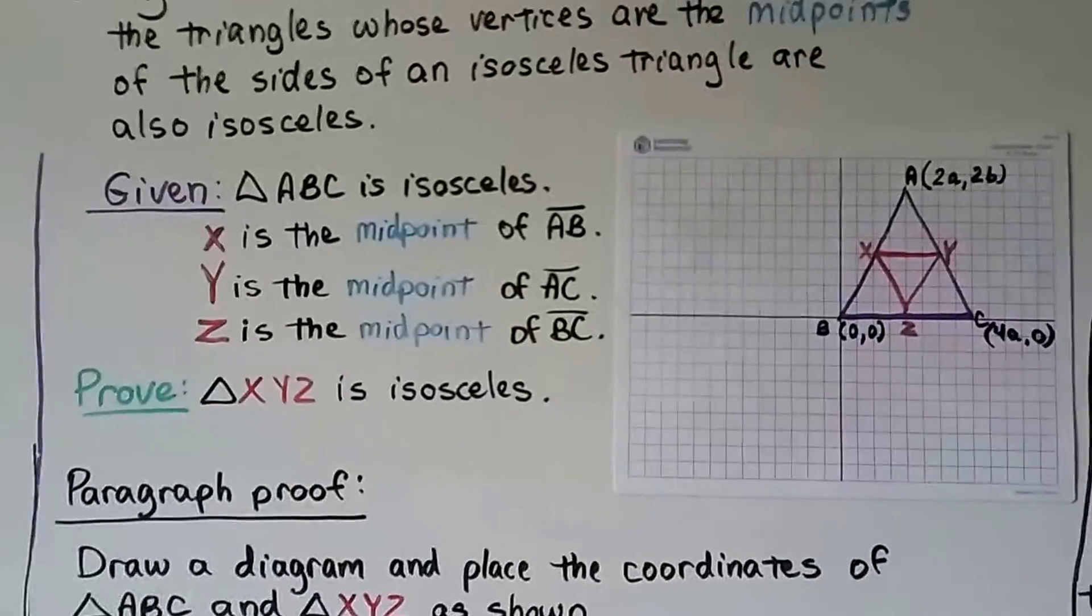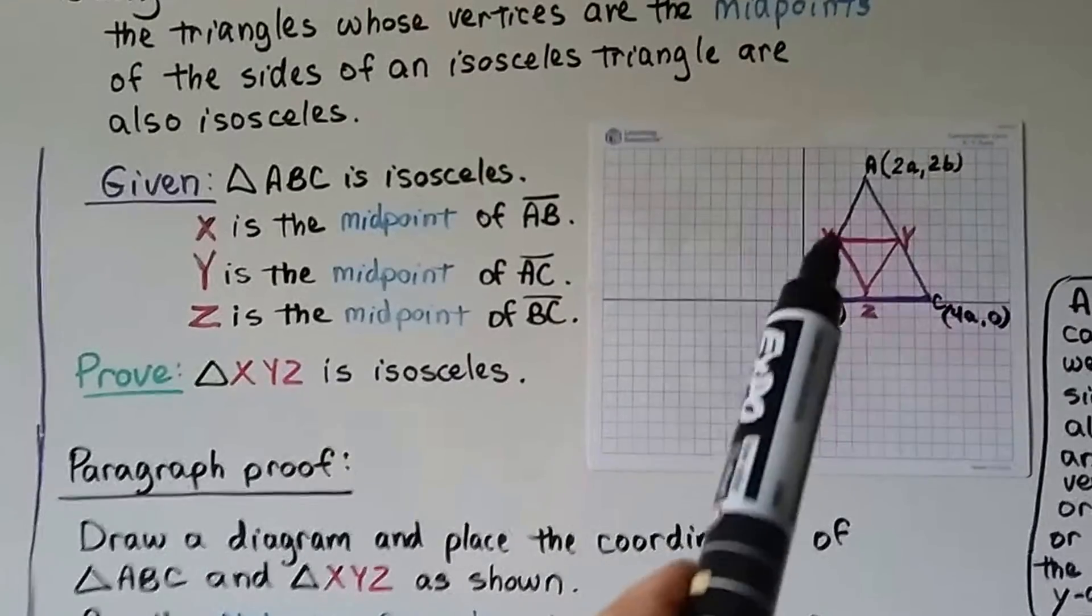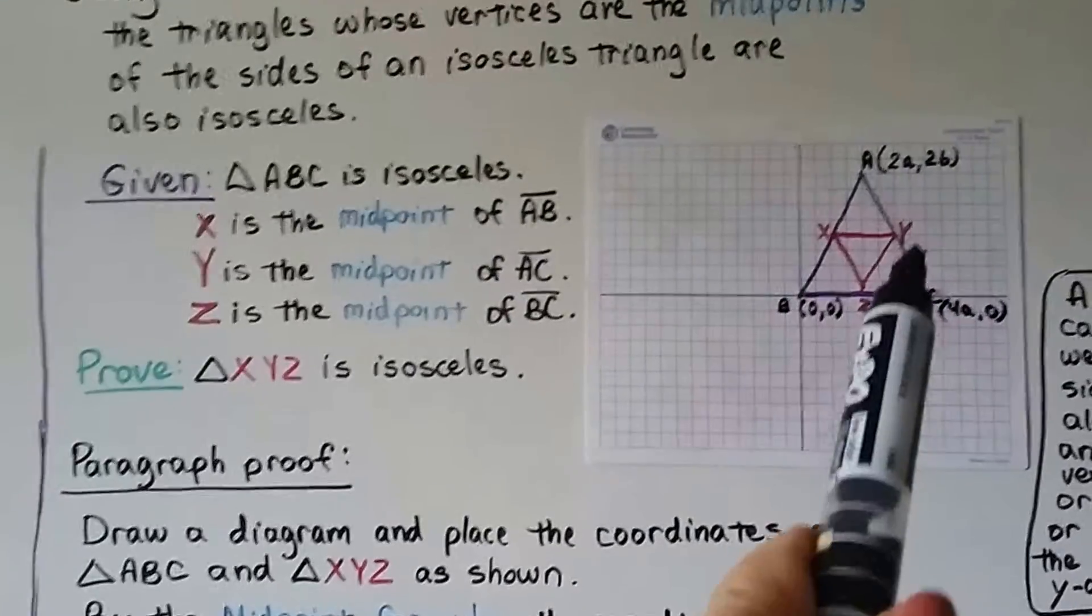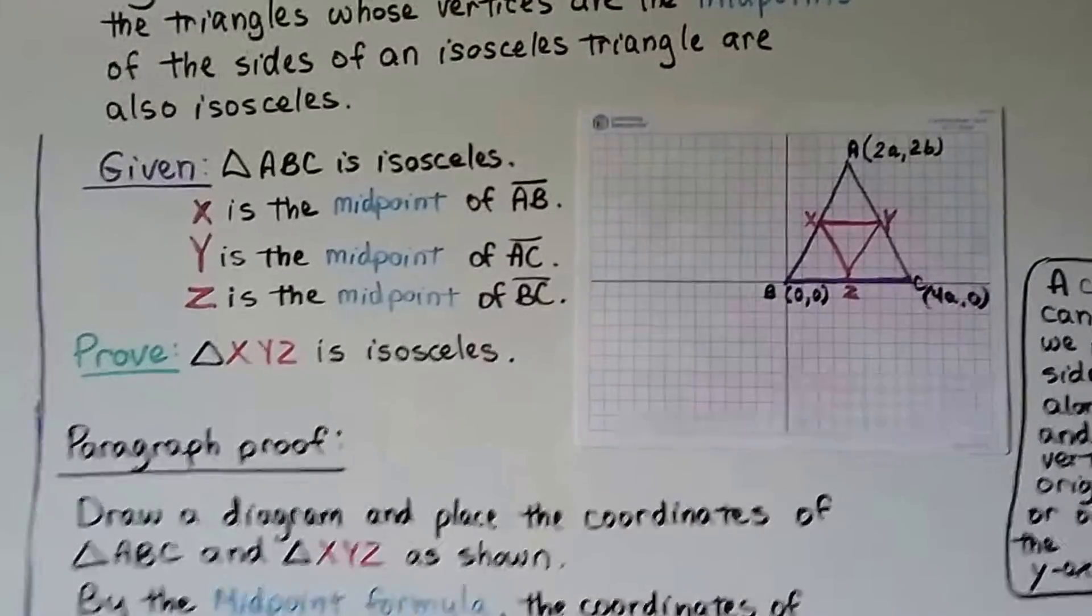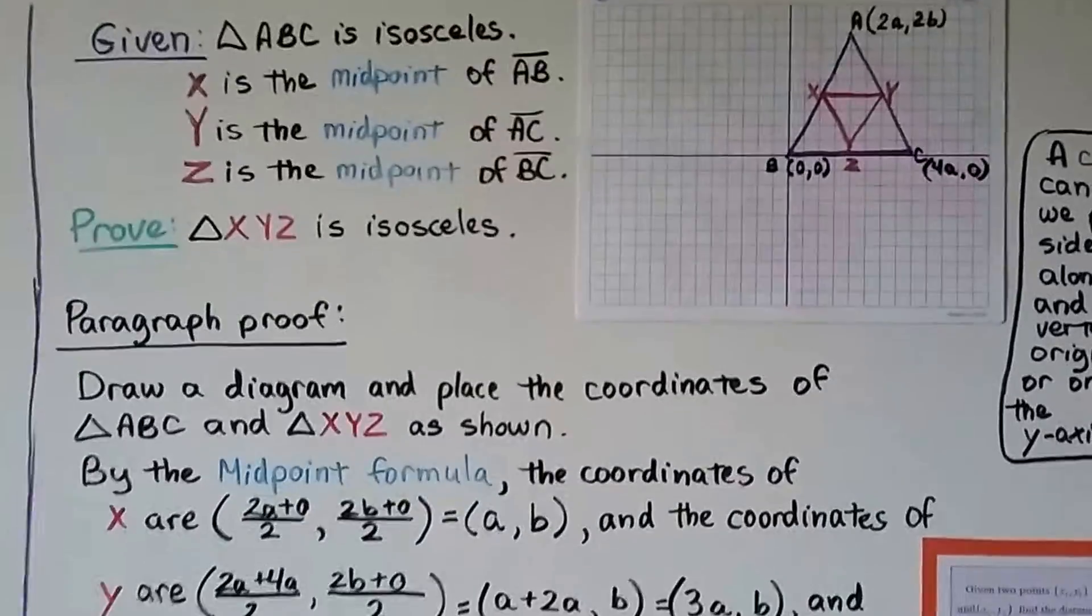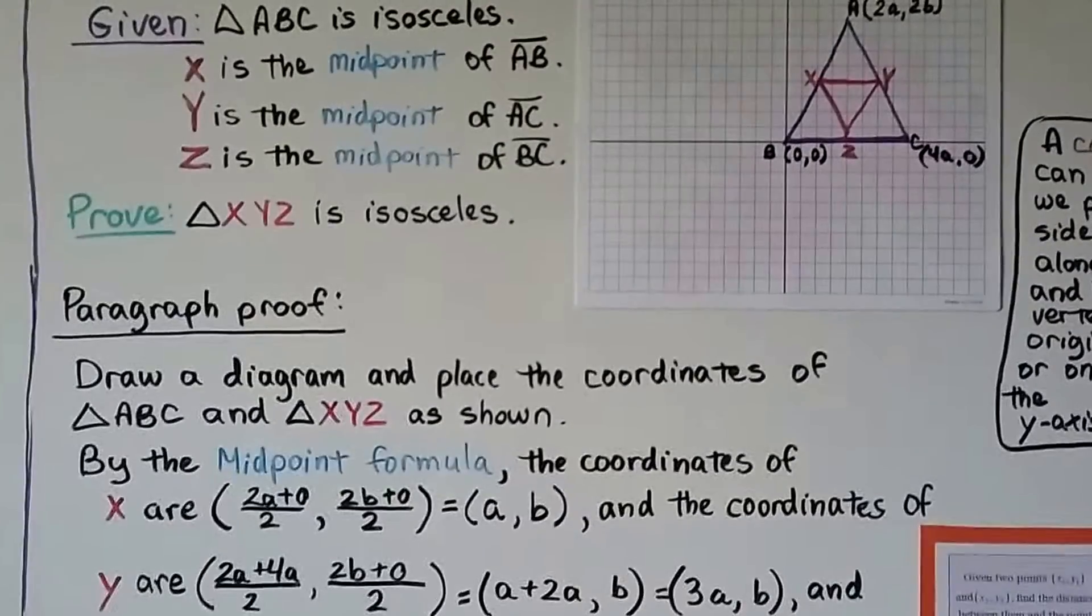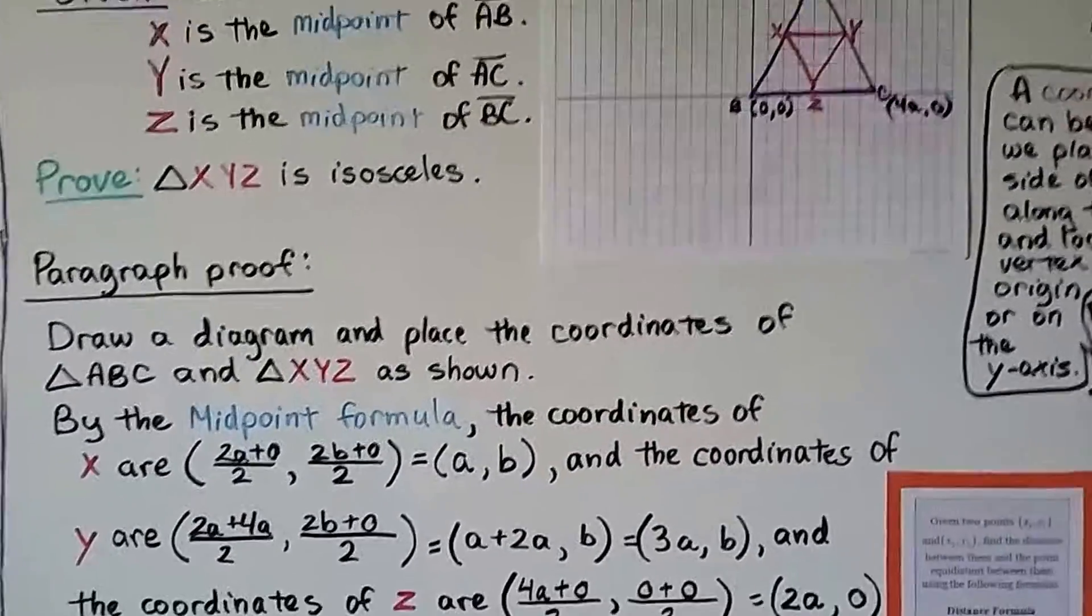So it's given that triangle ABC is isosceles, X is the midpoint of AB, Y is the midpoint of AC, and Z is the midpoint of BC. We need to prove that triangle XYZ is isosceles. We draw a diagram and place the coordinates of triangle ABC and triangle XYZ as shown. And by the midpoint formula...